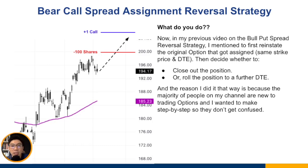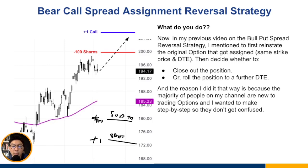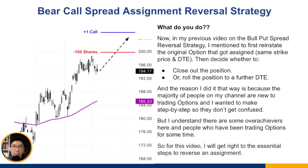The reason I did it that way is because the majority of people on my channel are new to trading options, and I wanted to make it step by step so they don't get confused. For example, if you already have the 100 shares and one long put at the bottom, if you were to straightaway sell one with a 50 DTE, you'd be left with a 50 DTE short put and an 8 DTE long put, which confuses a lot of new traders when they see two different DTEs.